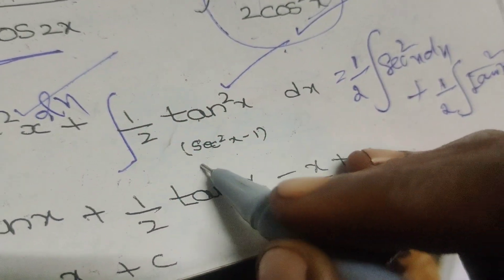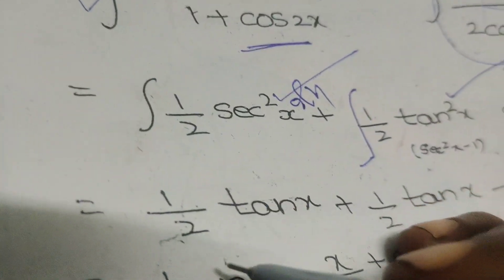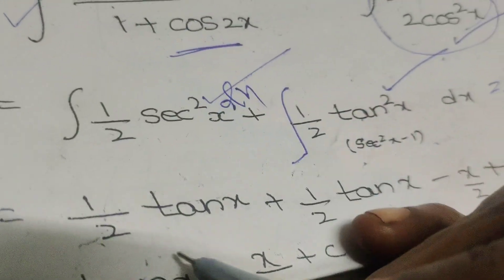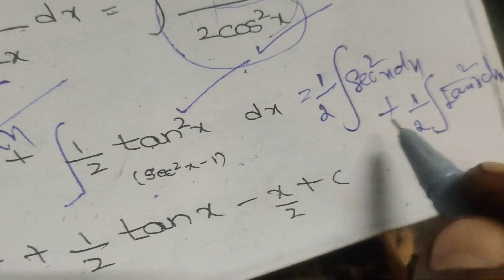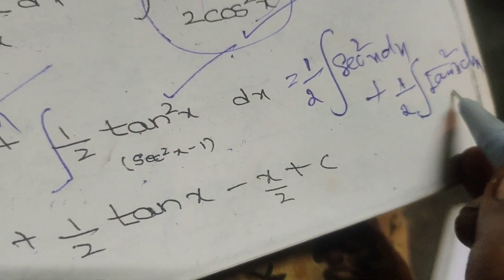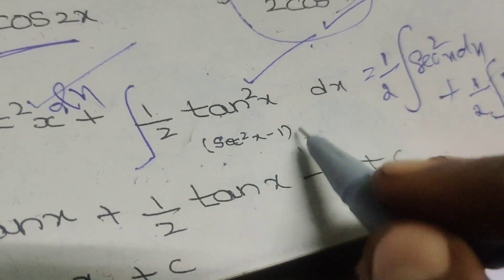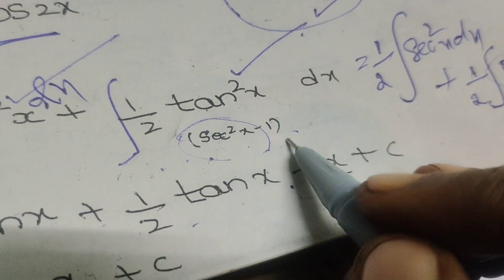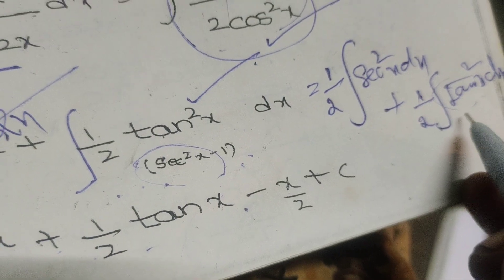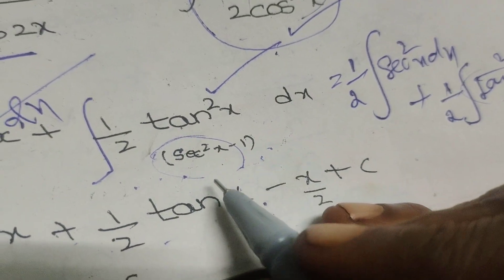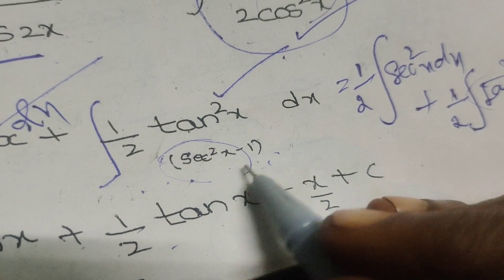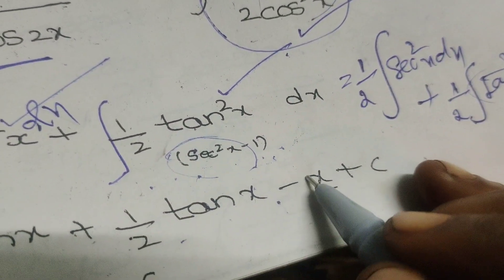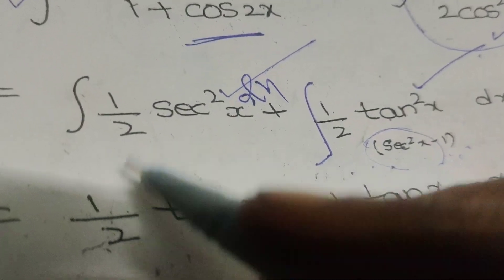Now integrate. For the tan²x term, we write tan²x = sec²x - 1. So we have (1/2)∫sec²x dx plus (1/2)∫(sec²x - 1) dx, which gives (1/2)∫sec²x dx plus (1/2)∫sec²x dx minus (1/2)∫1 dx, yielding x/2 from the last term.